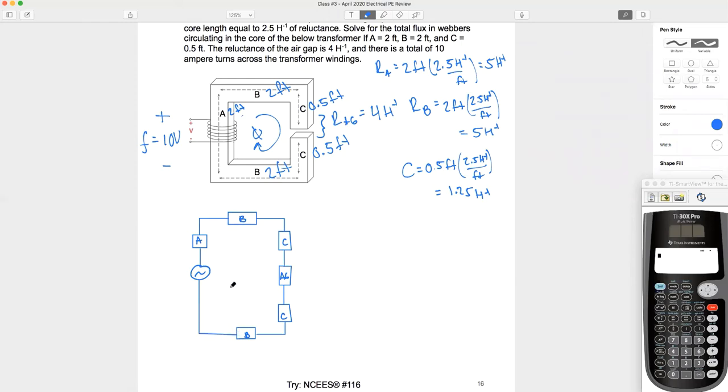All right, so let's fill in the values. What is our magnetomotive force? So what was our magnetomotive force? F equals 10 ampere turns. What was A? A is 2 feet times 2.5 is 5 inverse henries. B is also 5 inverse henries. C is 1.25 inverse henries. And the problem gave us the air gap as 4 inverse henries.